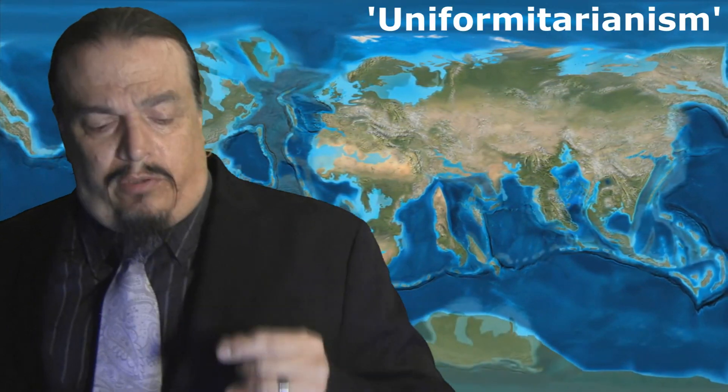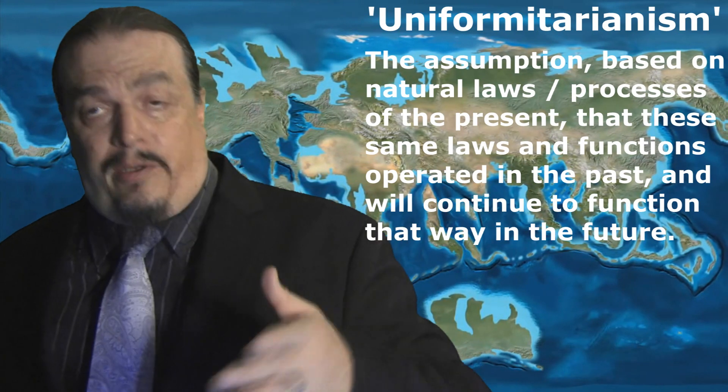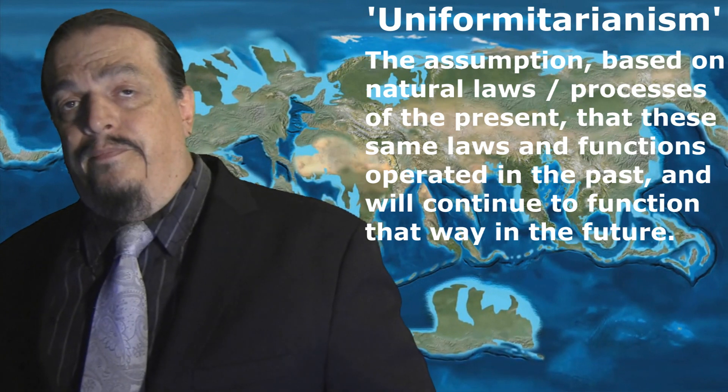The secret laws of the universe can be known, and once they are known, they can be predicted backwards and forwards. This is a principle called uniformitarianism — the assumption, based on natural laws and processes of the present, that these same laws and functions operated in the past the same way they do now, and that they will continue to function that way in the future. So there will never be any turtles supporting the Earth in the past or in the future — because where are they now? Where's the evidence of them now? You can predict from the way plate tectonics work now that they worked that way in the past, and they continue at much the same rates in the present as they will in the future. It's the only thing that makes sense, and it's how we make sense of the world we live in.